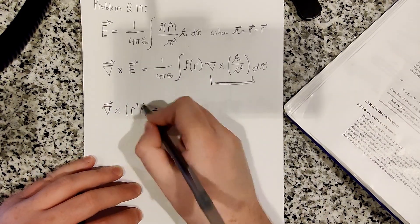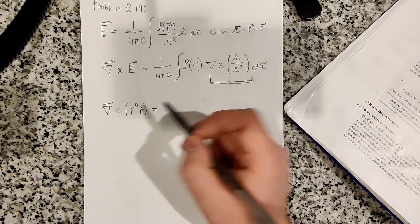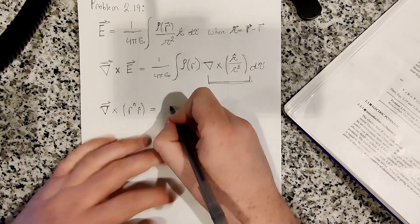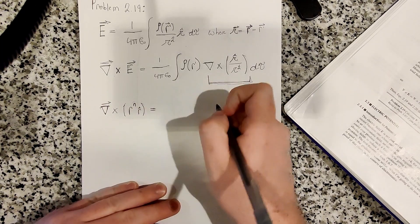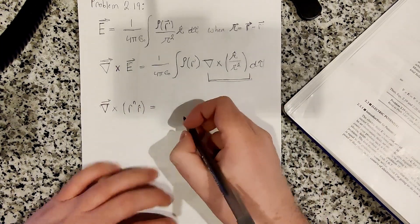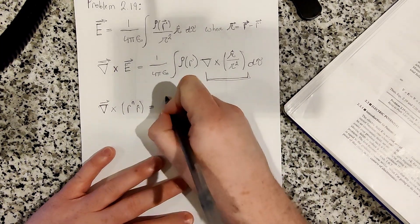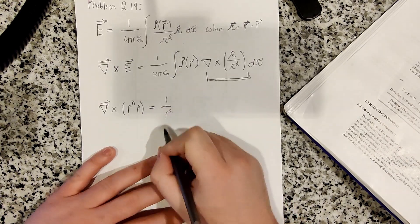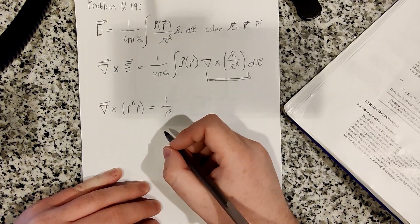So this is in spherical coordinates, this equation. So the curl in spherical coordinates, given that we only have a r component, would be 1 over r sine theta.